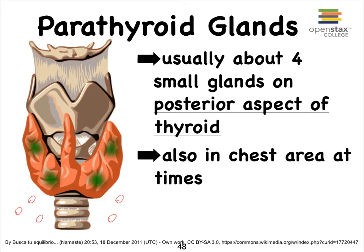Because these parathyroid glands are typically associated with the thyroid gland, you can imagine that when part of a thyroid gland needs to be removed — or the whole thyroid gland, possibly due to thyroid cancer — the parathyroid glands are mostly removed as well, if not completely, and that has its consequences when it comes to parathyroid hormone.